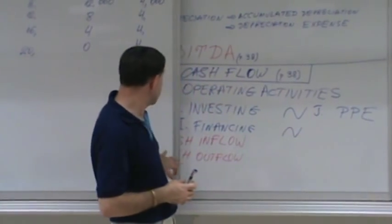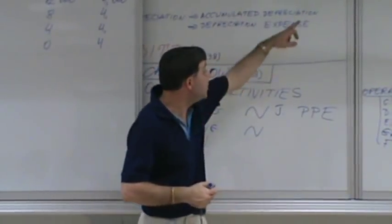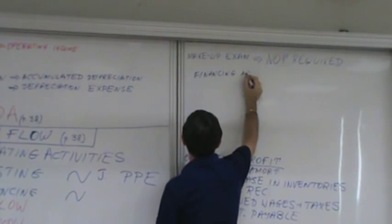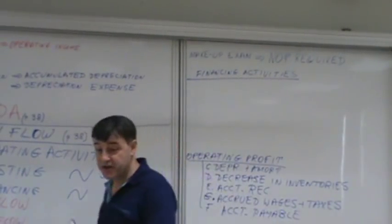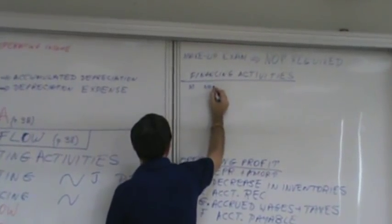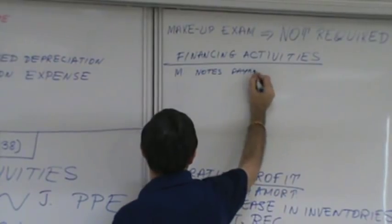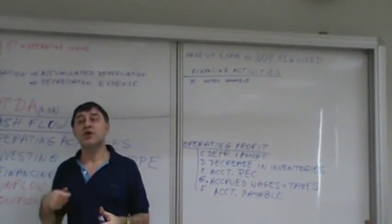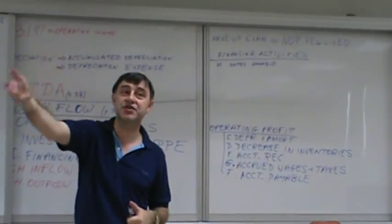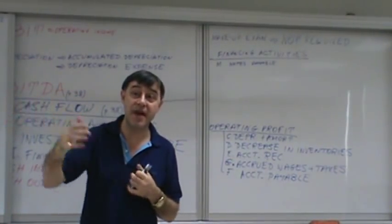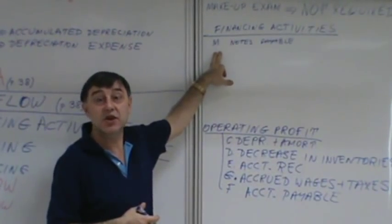The last component is financing activities. Financing activities are fairly straightforward. For example, M — increasing notes payable: if somebody gave you a million in cash and in return you gave them a note payable, your notes payable increase and you obviously increase cash from financing. In other words, when you issue a financial instrument, you get cash for it.